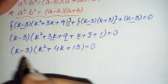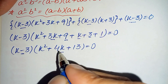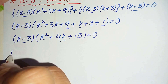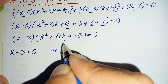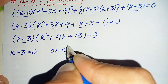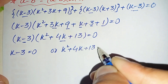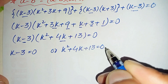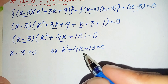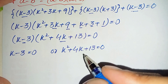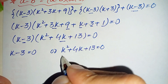The product of these two factors is zero, so either (k minus 3) equals 0 or (k squared plus 4k plus 13) equals 0. We will first solve the quadratic equation. We cannot factor it, so we will use the quadratic formula to find its roots.